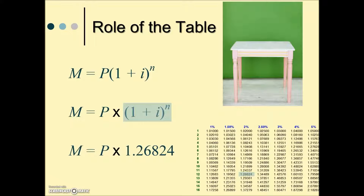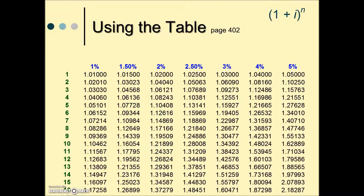Let's take a look at how this works. We will replace the whole quantity in the shading with a value that corresponds with the interest rate per compounding period, i, and n, the number of compounding periods, then multiply it by the principal. Here's the table — it's located in your textbook on page 402 — and it is the replacement for the quantity 1 plus i raised to the n power.